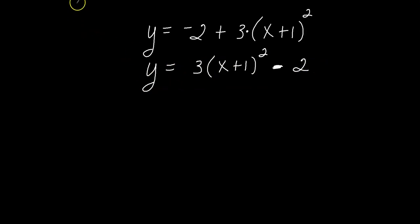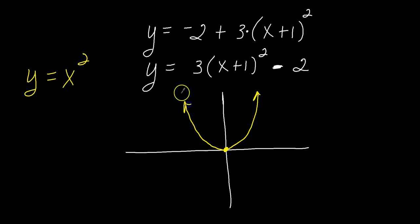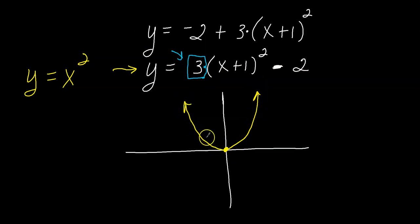Now I can apply transformations. The parent function is again y equals x squared. When you multiply by a number greater than one, like three, it makes the parent function appear skinnier — that's called a vertical stretch by a factor of three. There's no negative sign, so there's no reflection. So I make the graph skinnier, something like this.